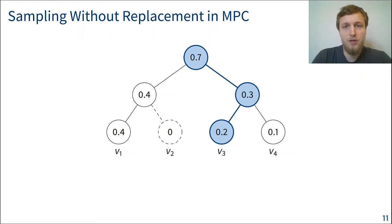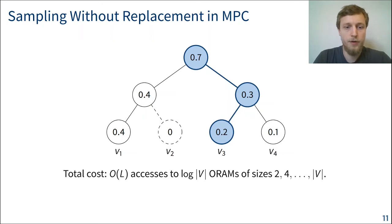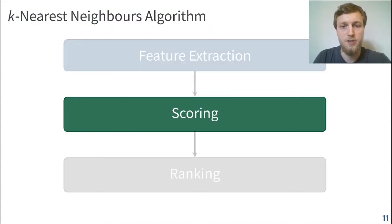Now, how can we do this tree traversal in MPC? For this, we're going to use a generic approach based on ORAM. So if we represent each layer in the tree as an ORAM of doubling sizes, then we need a total of O of L accesses. And the total number of ORAMs is the depth of the tree, which is log V. So we're going to implement that in OblivC and use different ORAM constructions depending on the size of the level of this tree. So this concludes the feature extraction phase. Let us go on to the scoring phase.